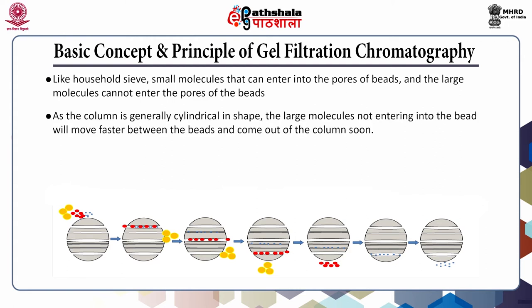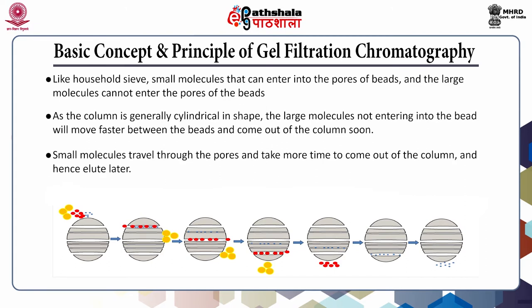As the column is generally cylindrical in shape, the large molecules not entering the bead will move faster between the beads and come out of the column soon. The yellow color molecules come out sooner because they do not enter inside the bead. Conversely, the small molecules travel through the pores and take more time to come out, so they will be eluted later from the gel filtration chromatography.